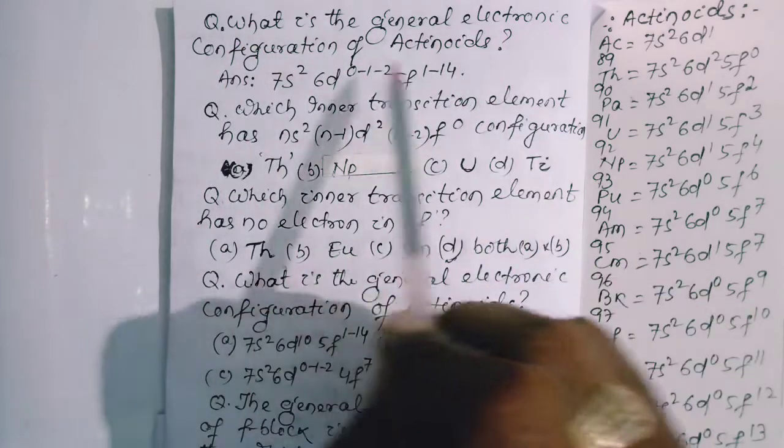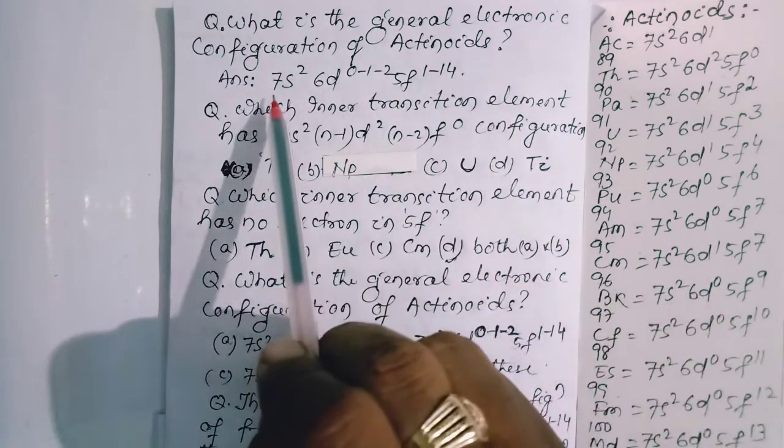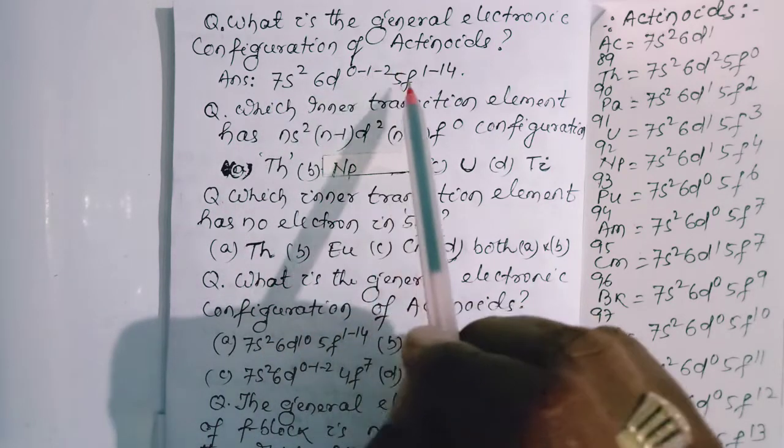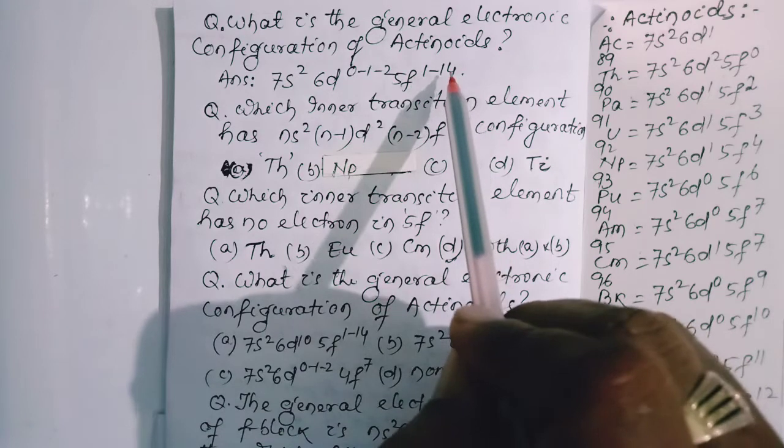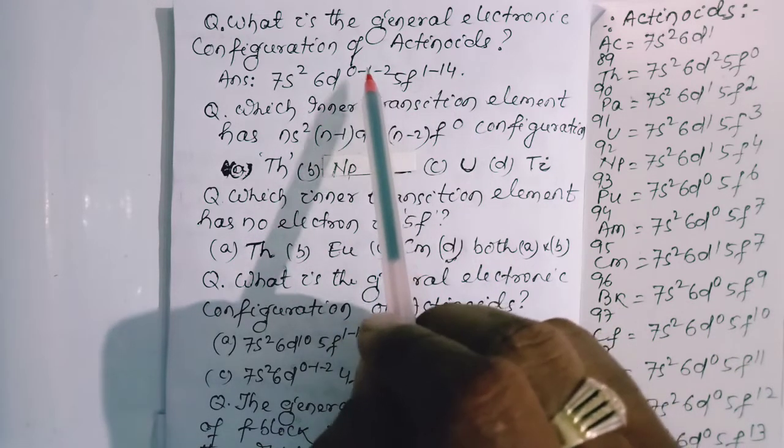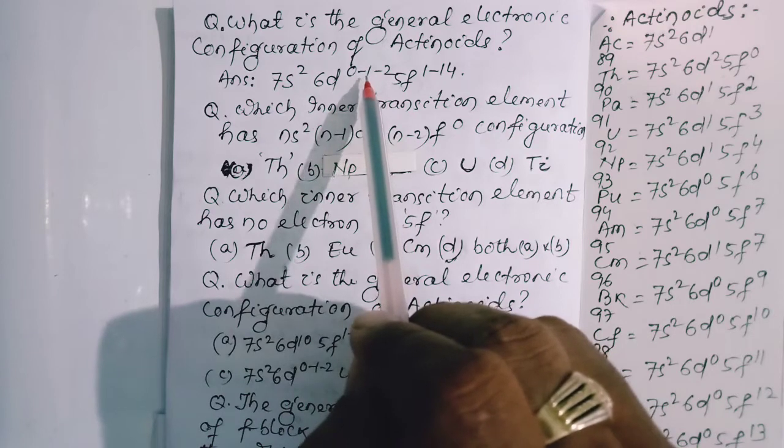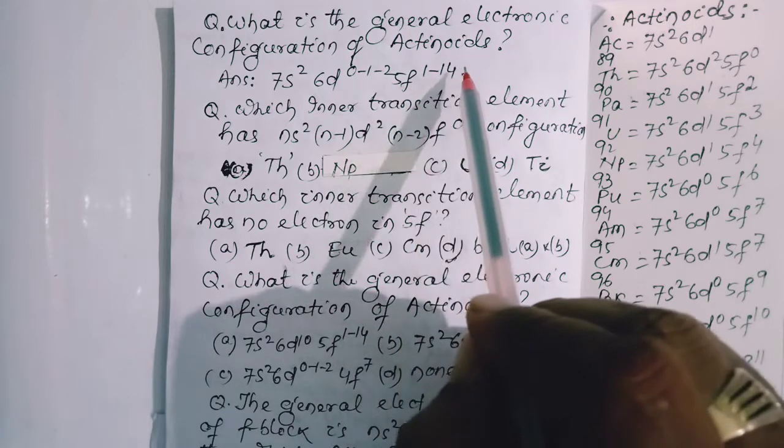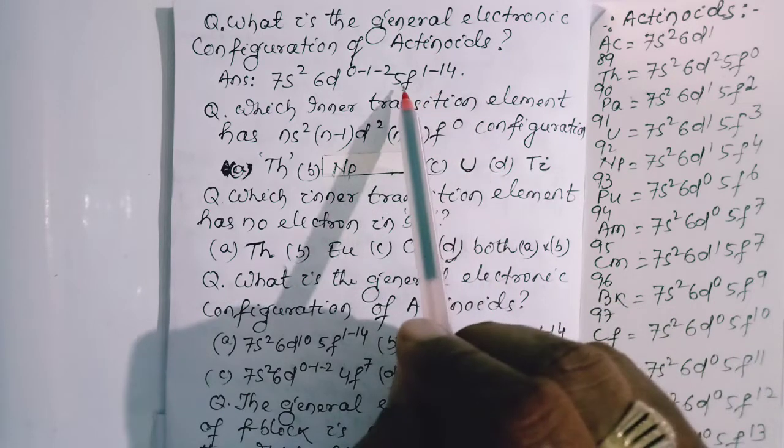What is the general electronic configuration of actinoids? 7s² 6d⁰ or ¹ or ² 5f¹⁻¹⁴. Sometimes it becomes 0, sometimes it becomes 2, and sometimes it is 1. 5f⁷, 5f¹⁴, and 5f⁰ are more stable.